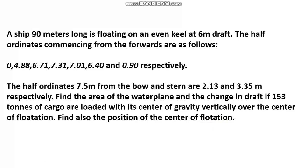One of the biggest difficulties students face is confusion about which Simpson's rule to use and what type of data is given. First, count the number of stations — the half ordinates from forward to aft: one, two, three, four, five, six, seven. Seven stations are given. Because seven is an odd number, we can definitely use Simpson's one-third rule.